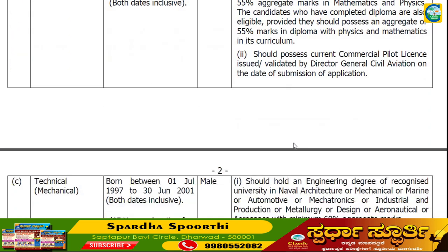For the Commercial Pilot License branch, candidates should possess a current Commercial Pilot License issued or validated by the Director General of Civil Aviation (DGCA) on the date of submission of the application. If you have passed 12th standard and hold a valid CPL from DGCA, you will be eligible for this branch.